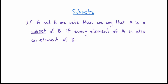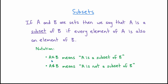Let's talk about notation for and examples of subsets. If A and B are two sets, then we say that A is a subset of B if every element of A is also an element of B. The notation uses a symbol like a sideways U with a bar under it. Some people use this notation without the bar, but since that can be confused with meaning A is a proper subset of B, I prefer to keep the bar. If A is not a subset of B, we use the same notation but draw a line through the subset sign — meaning there's at least one element of A which is not an element of B.